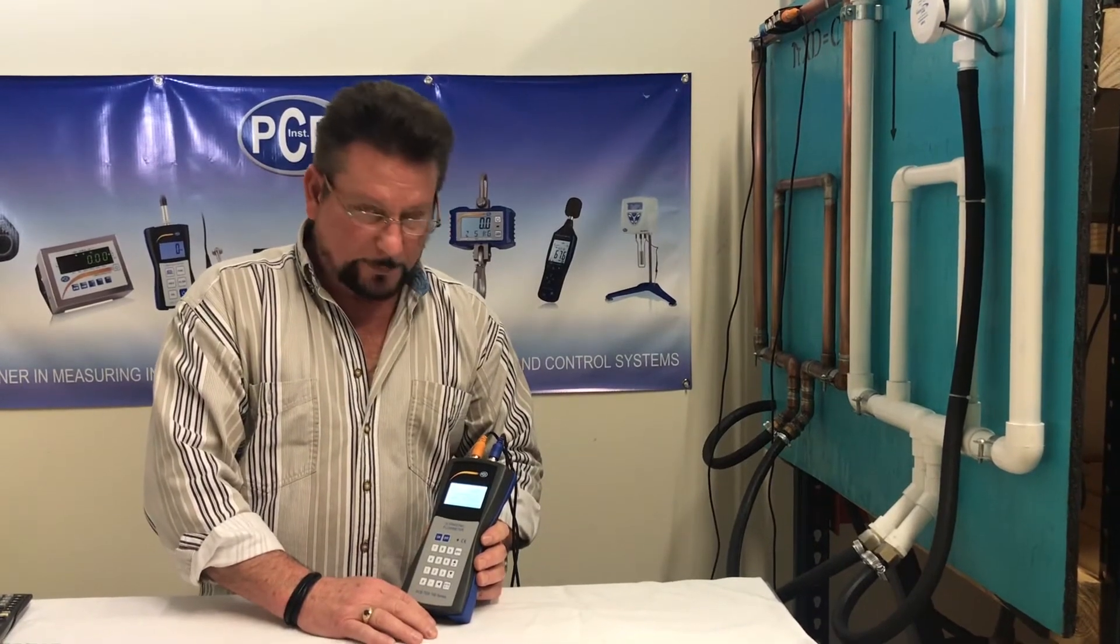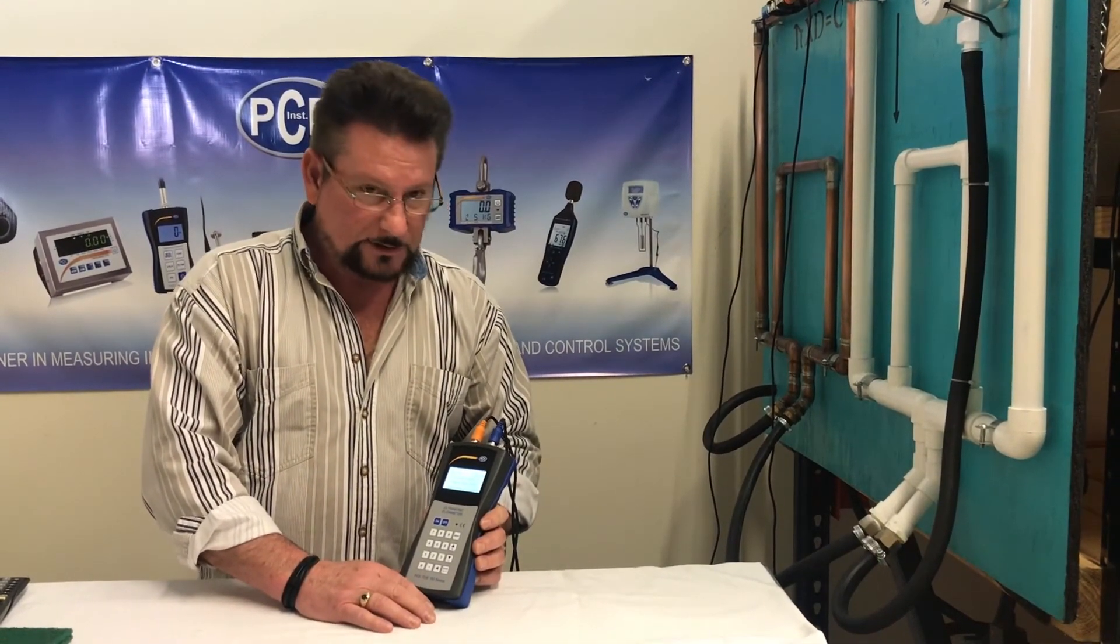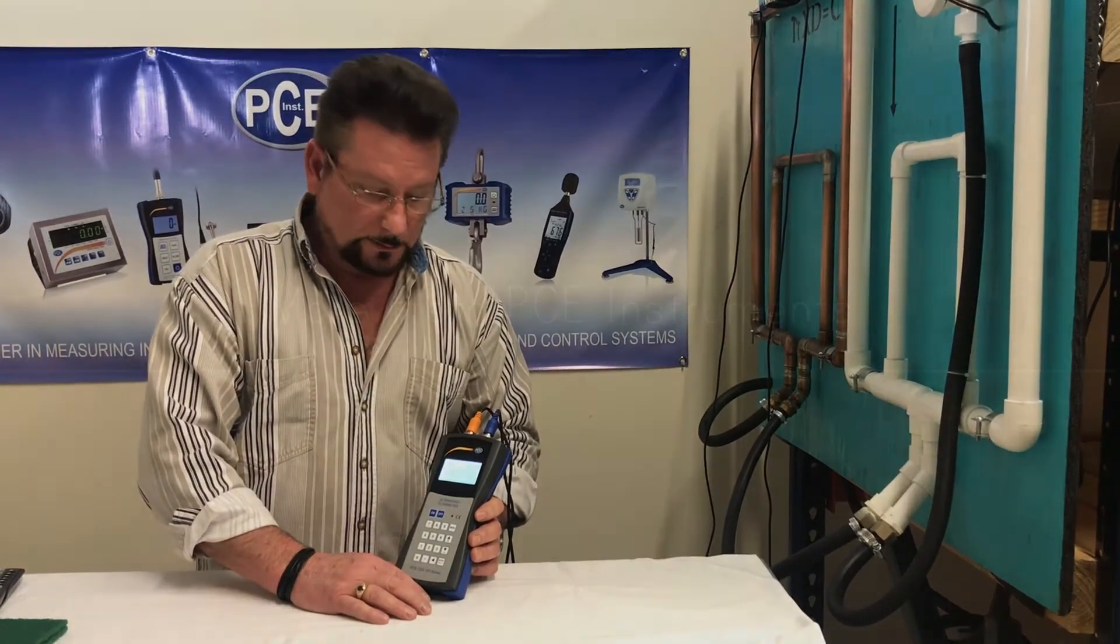This completes the instructions on the basic setup for the PCE TDS 100. This is the HS model for smaller pipe size, 3/4 inch to 4 inch pipe.